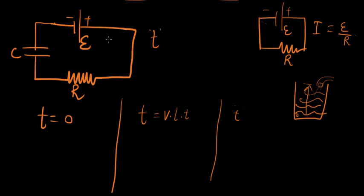So when time is zero, let's consider that the capacitor is totally discharged, it's totally empty. When time is zero the circuit has just started. So what happens is the entire EMF of the battery appears across the resistance R.